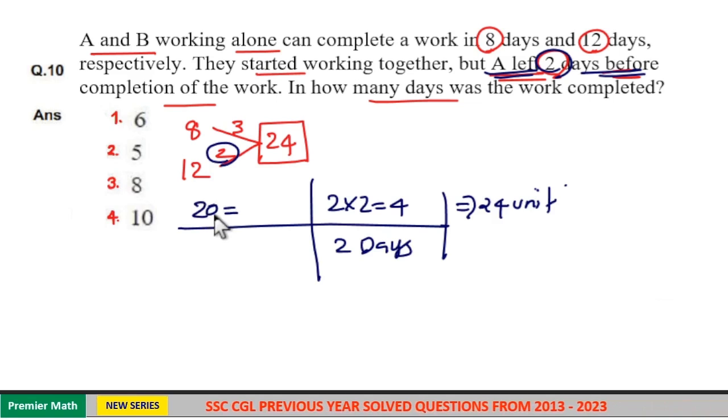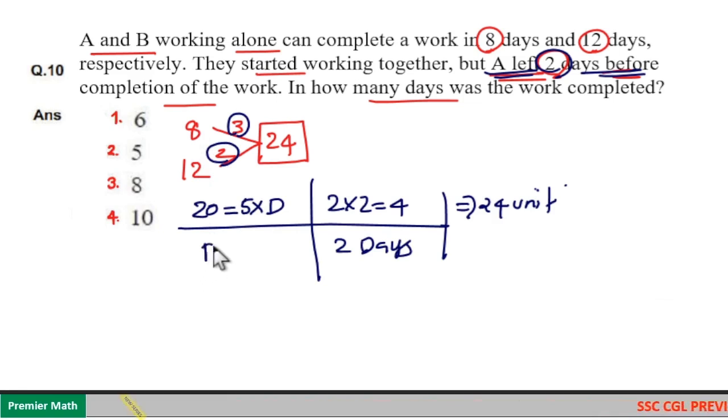Which means remaining work is 24 minus 4, which is 20 units, completed by both A and B. That is 3 plus 2, 5 units of work will be completed by A and B in one day. So in D days they will complete 20 units, which means D is equal to 20 by 5, 4 days.